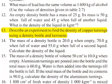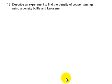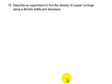In this question, we are required to describe an experiment to find the density of copper turnings using a density bottle and kerosene. This experiment consists of four basic steps.